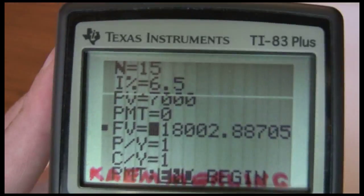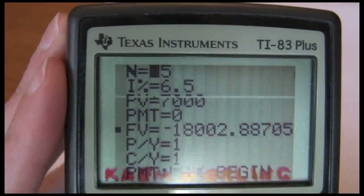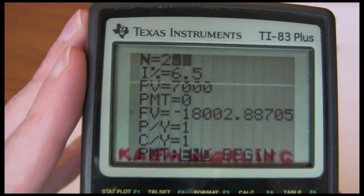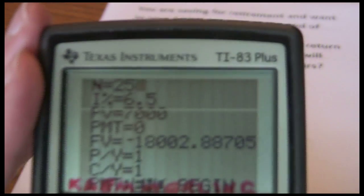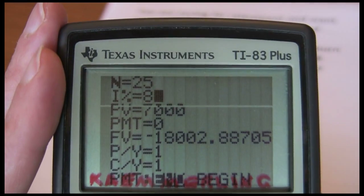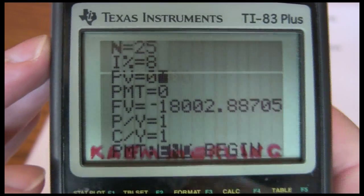Now my last problem is still on here. But all I need to do is go start re-entering stuff. My N is now not 15 but 25. See that for my problem. My interest rate is 8%. So just put in 8 for my interest. My present value is zero in this example.